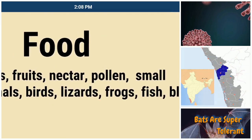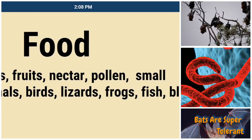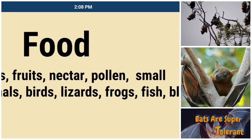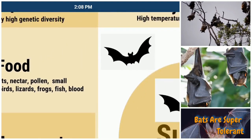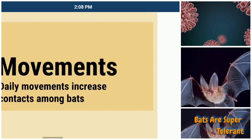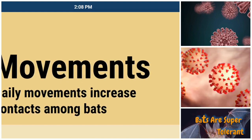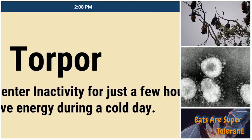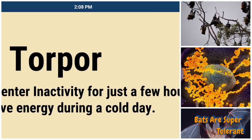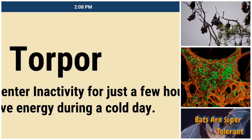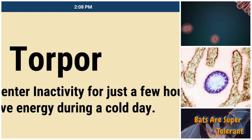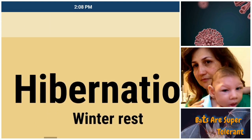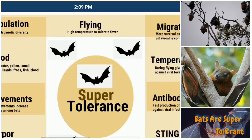Their food habits — they eat insects, fruits, nectar, pollen, small mammals, birds, lizards, frogs, fish, and even blood of vertebrates. These variations make them survive despite having so many viruses in their bodies. Their daily movements increase contacts among bats, which is why they carry so many viruses. The torpor property — bats enter inactivity for just a few hours to save energy during cold days — causes congregation, and also high temperature increases their resistance against viruses. Hibernation during winter rest also contributes.